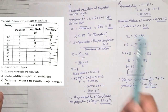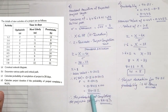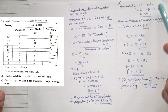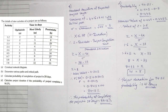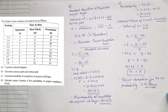This is how to solve PERT problems: first find expected time and variance, then construct the network diagram and find the critical path, then either find the probability when days are given or find the number of days when probability is given. This entire topic consists of these four things to remember. I hope everyone understood. Thank you.